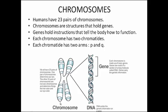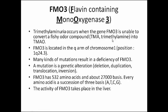Each chromosome has two chromatids, and every chromatid has a P arm and a Q arm. All of these carry genes — a gene is a part of DNA. Now we'll speak about the particular gene FMO3, the flavin-containing monooxygenase 3. Trimethylaminuria occurs when the gene FMO3 is unable to convert the fishy-odor compound TMA (trimethylamine) into TMAO — it is an oxygenation reaction.